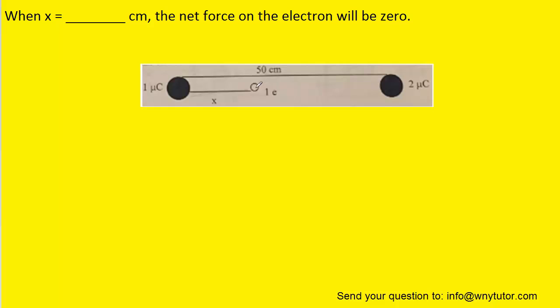We have an electron that is situated between a 1 microcoulomb charge and a 2 microcoulomb charge. Let's examine the interaction between the 1 microcoulomb charge and the electron here first.